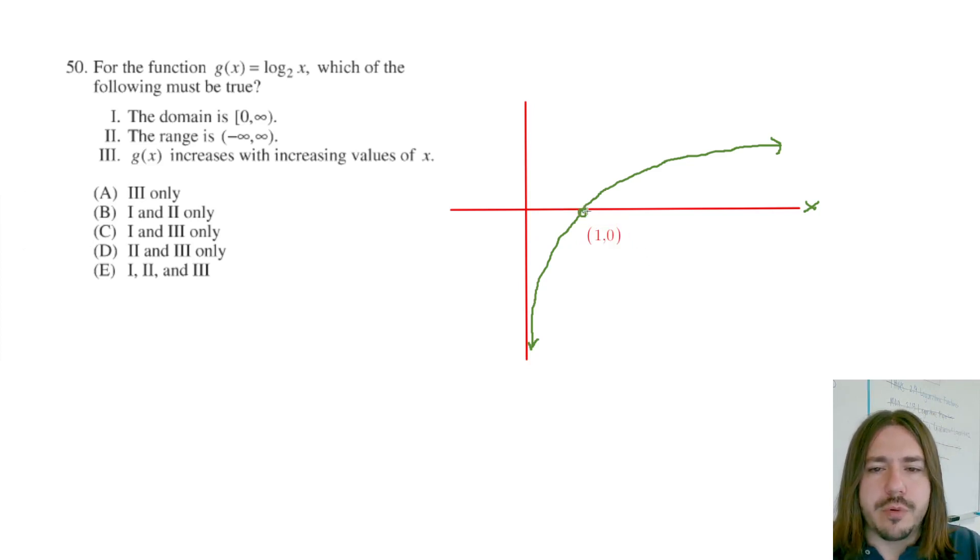And then we're going to have another point out here. If I plug in 2 for x, 2 to the first power is 2. So this would be 2, 1. Okay, and we've got this vertical asymptote along the y-axis along x equals 0.